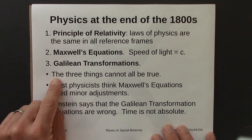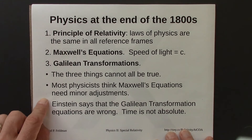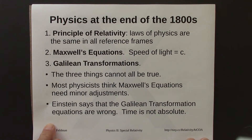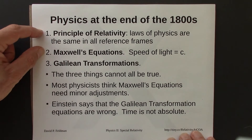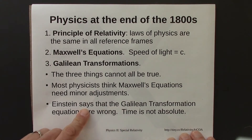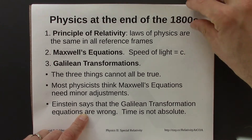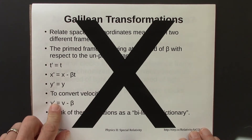These three statements cannot all be true at the same time. Most physicists thought that Maxwell's equations needed some adjustment if you're moving relative to the ether. But Einstein took a different view — he said the Galilean transformation equations are wrong, that the principle of relativity and Maxwell's equations are correct, but Galileo is wrong. In particular, time is not absolute, so the Galilean transformation equations are not correct.